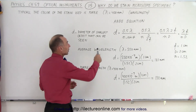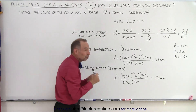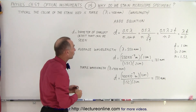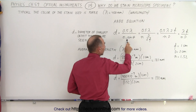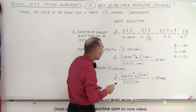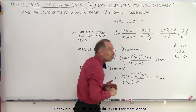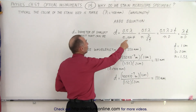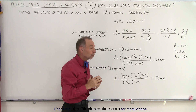Again we go back to the Abbe equation. Notice that the diameter of the smallest object that we can discern — that we can resolve — is equal to 0.5 times the wavelength of the light that we get from the specimen, divided by the index of refraction of the medium through which that light travels, times the sine of theta. Now remember that n times the sine of theta is the numerical aperture, and we're trying to increase that as much as possible so that we can decrease the smallest size of the object that we can resolve.